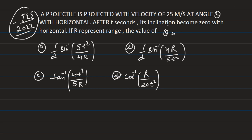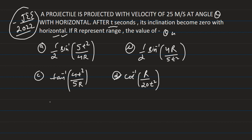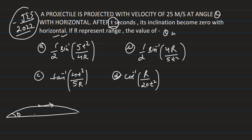After t seconds, its inclination becomes 0 with the horizontal. We have projected it at angle theta, but after t seconds the inclination becomes 0 with respect to the horizontal. This means the projectile is at the highest point, because at the highest point the inclination with the horizontal is 0. The time to reach the highest point is the time of ascent, and its formula is t = u sin θ / g.